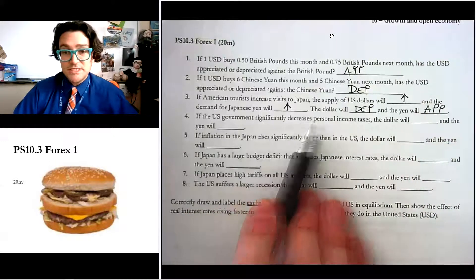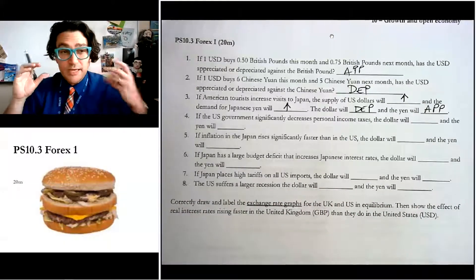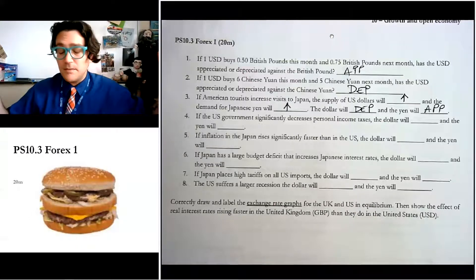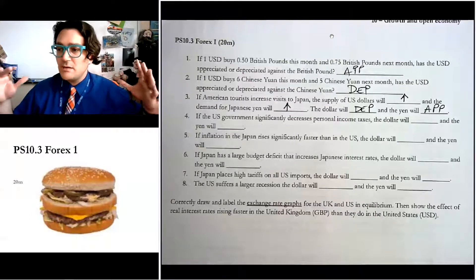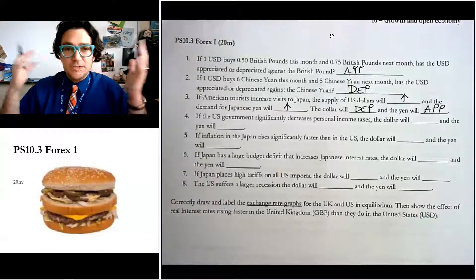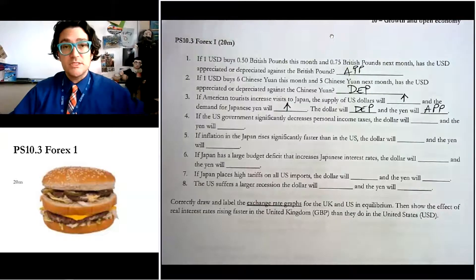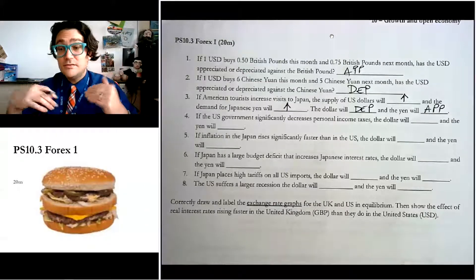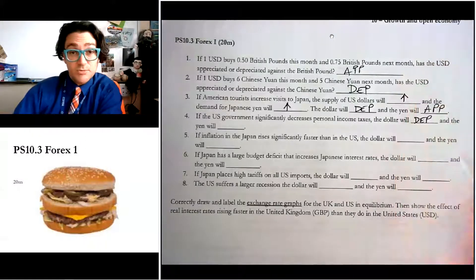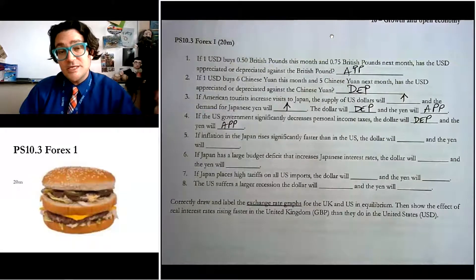If the U.S. government significantly decreases personal income taxes, the dollar will blank and the yen will what? Now this one's tricky because it gets you to think about like what happens? Well, if they change taxes, then that means people have more income. So as an American, if you have more personal income, and let's say on average, the average American spends 5% of their income on Japanese goods and services. Well, now they still spend the same 5%, but their income is larger. And so they buy more Japanese goods and services. So they're going to need more yen and they're going to supply more dollars.